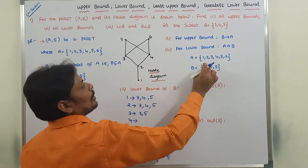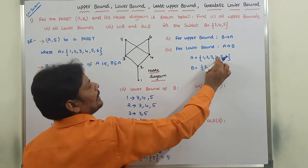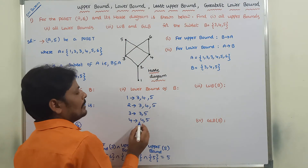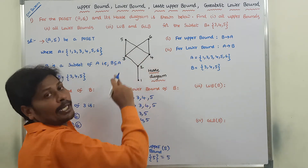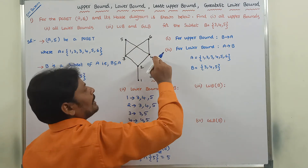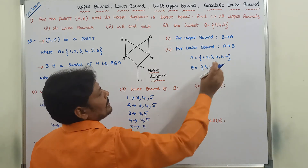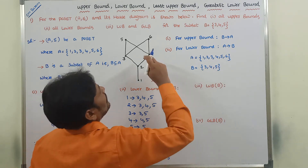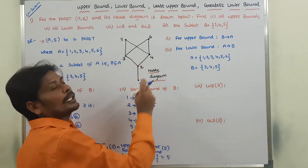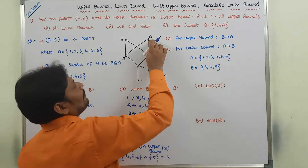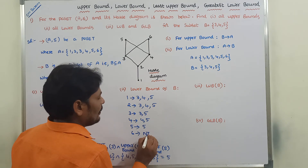Taking element 3: 3 is related with 3, not with 4, but related with 5. Taking element 4: 4 is related with 4 and 5. Taking element 5: 5 is related with 3 and 4 as downward relations — not considered. 5 is related with 5 only. Taking element 6: 6 is related with 3 and 4 as downward relations — not considered. 6 is related with 5? No relation.